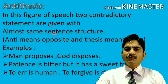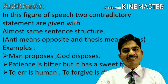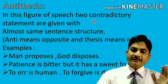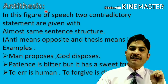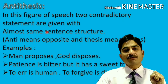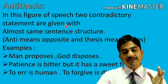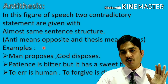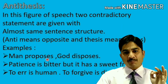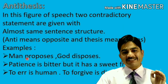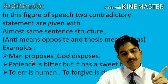In this figure of speech, two contradictory statements are given with almost the same sentence structure. This is antithesis. In oxymoron, we discussed that two opposite terms are put together — the opposite words are placed adjacent to each other. While in antithesis, they appear in two different parts of a sentence.